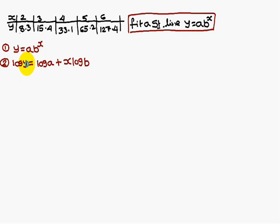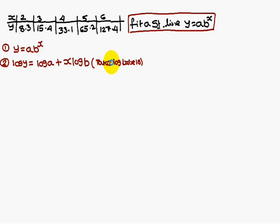We apply logarithms to both sides to base 10. The equation becomes: log y = log a + x·log b. We use base 10 because this equation does not have the term e. If the equation had an e term, we would apply base e instead.